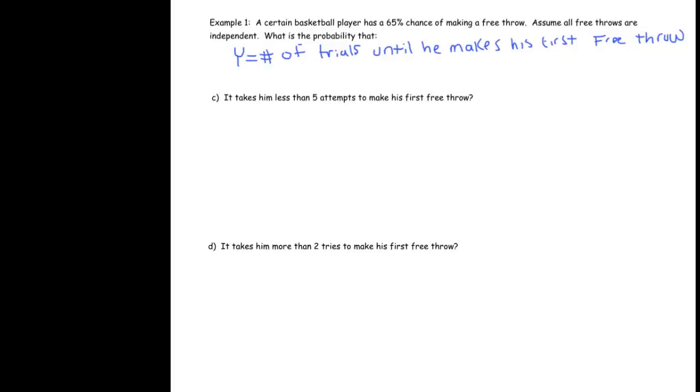All right, welcome back. We're still looking at the geometric probability model, and in this video, we're going to look at a few more problems that we'll want to model correctly and then calculate using our calculator. As a reminder, we were looking at the example of a basketball player who has a 65% chance of making a free throw, assuming all free throws are independent, and we want to know the probability it takes him less than 5 attempts to make his first free throw.